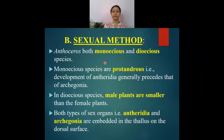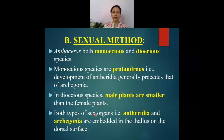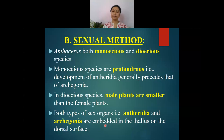Anthoceros also reproduces by sexual method. The plant body may be monoecious or dioecious. In monoecious species the plant body is protandrous, meaning development of the male sex organ (antheridium) takes place earlier than the female sex organ (archegonium). In dioecious species, male plants are generally smaller than female plants. Whether antheridia or archegonia are produced on a single or different plant body, they are always embedded in the thallus on the dorsal surface.